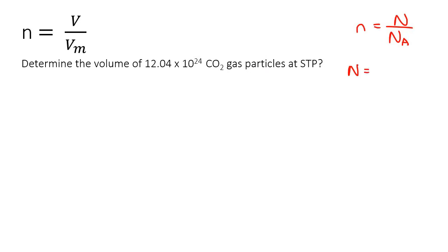So here you would actually use this formula that we've learned about in previous lessons, where n is the number of particles, and then Avogadro's is a number that we've learned about, which is 6.02 times 10 to the 23.